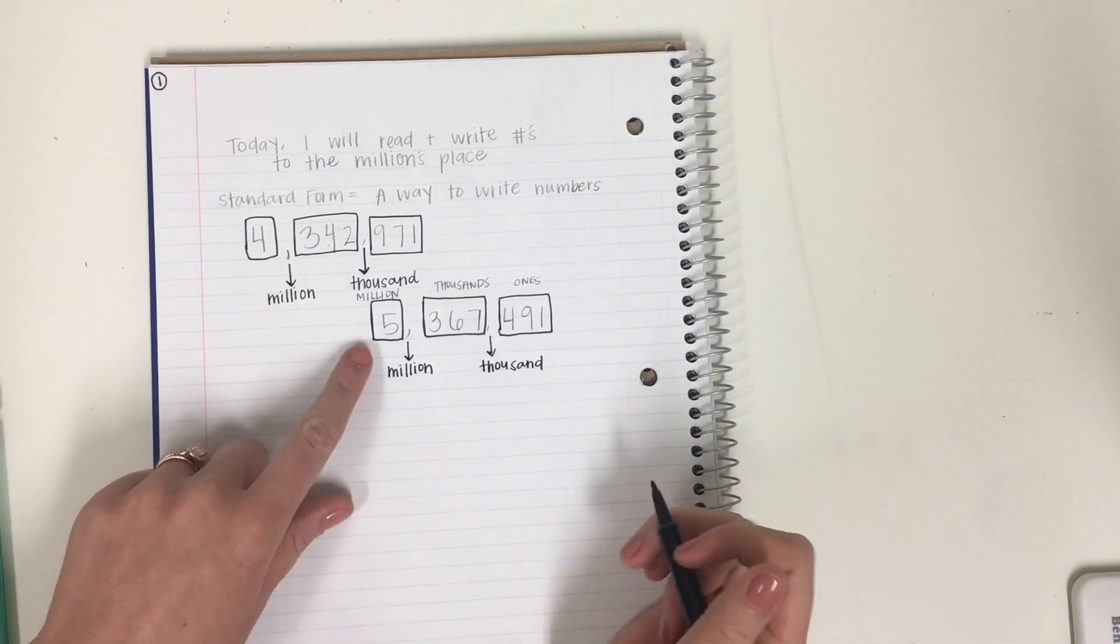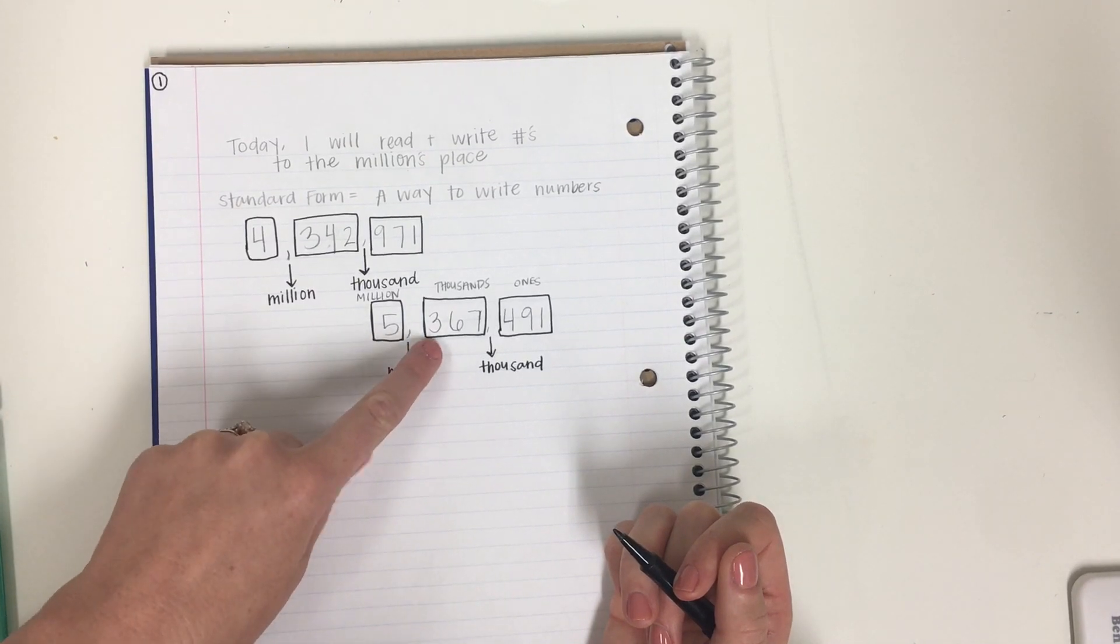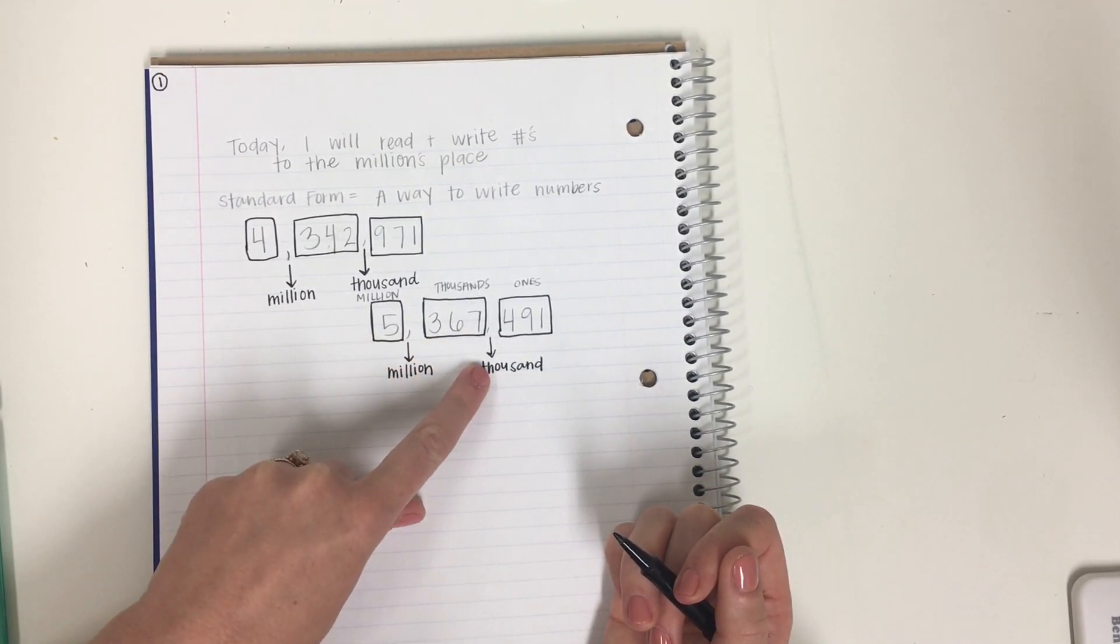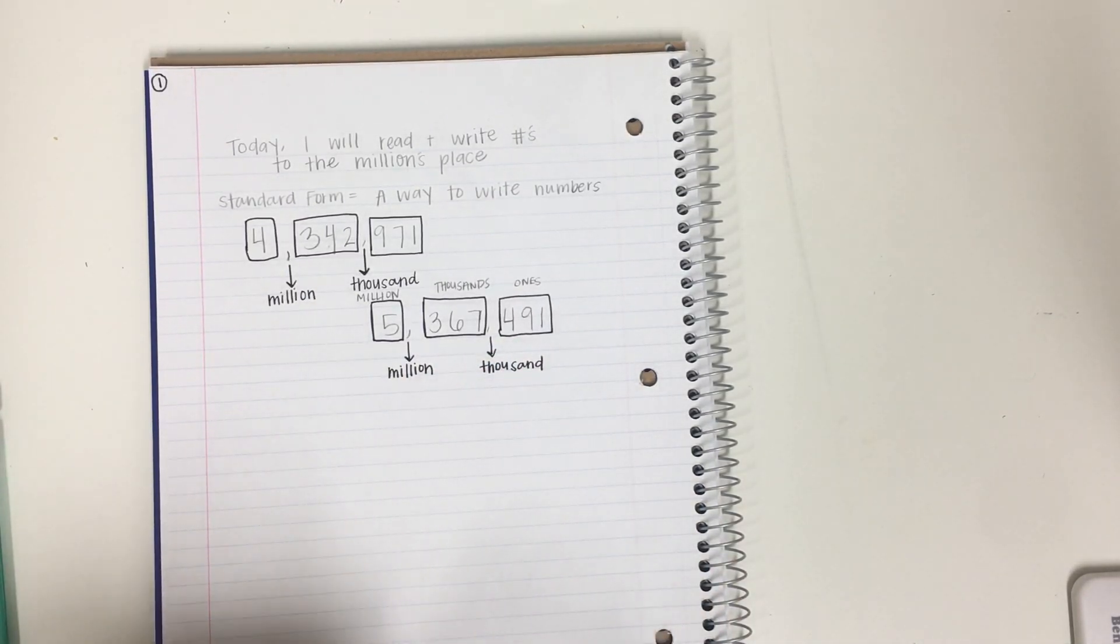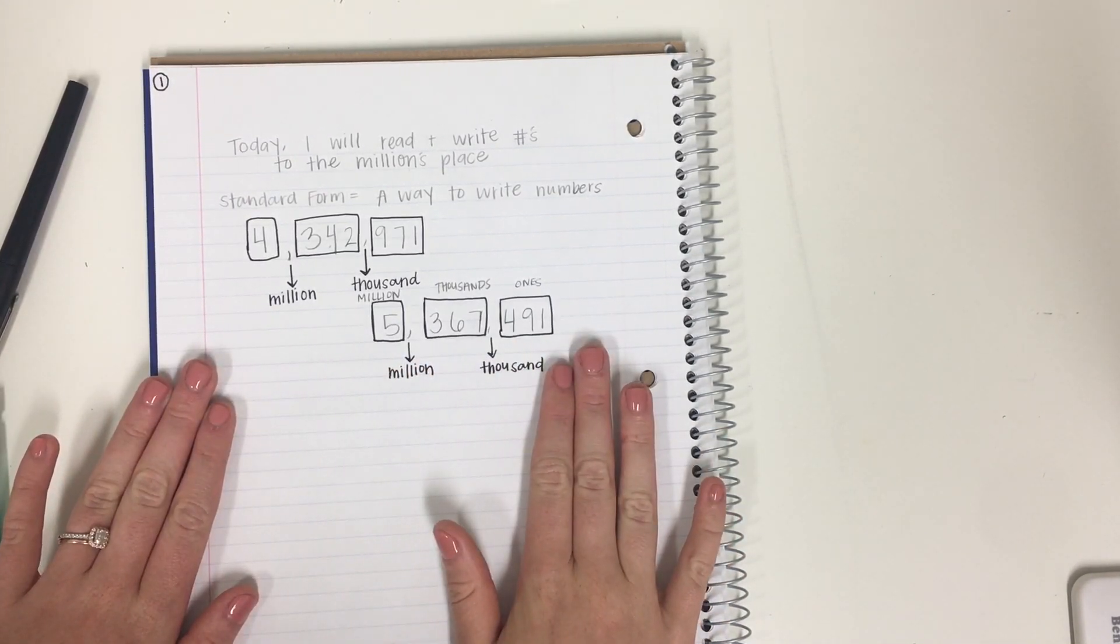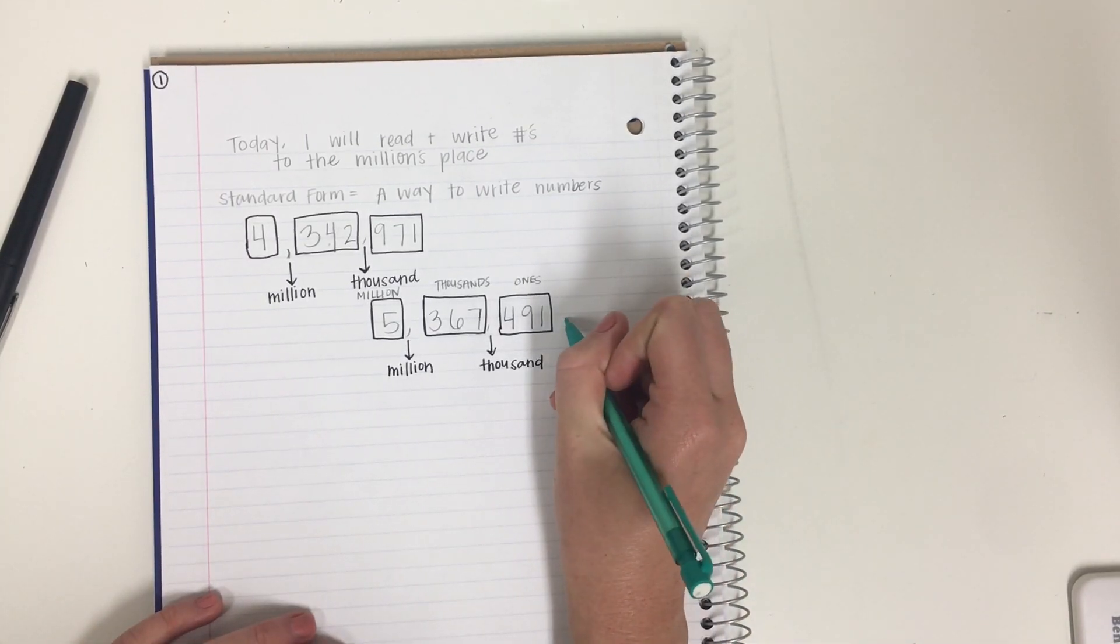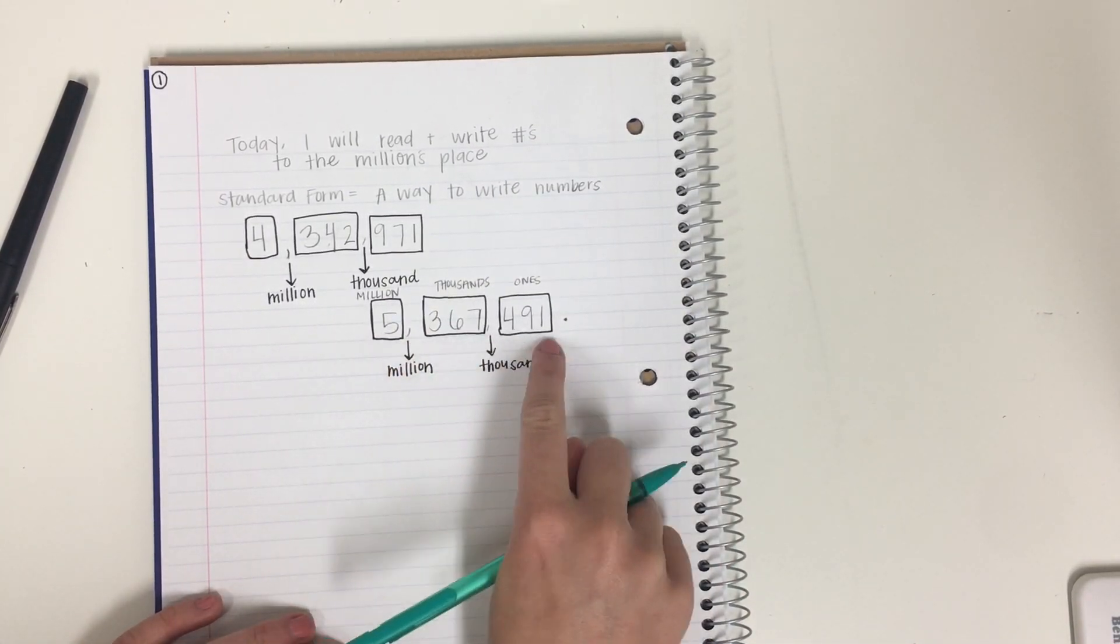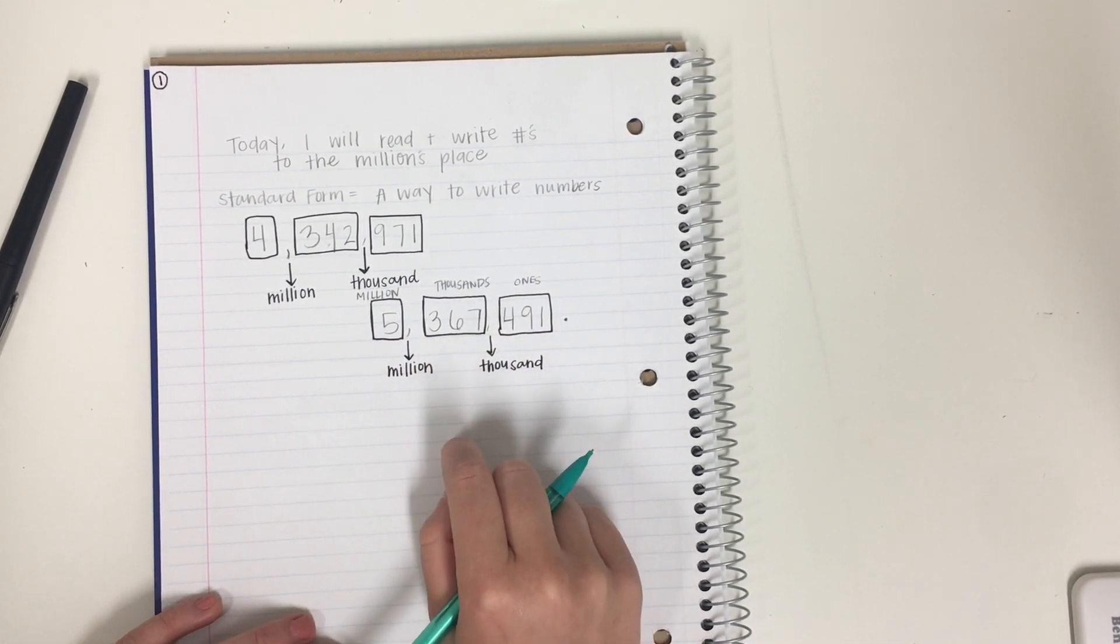Okay? So let's try reading this one together. 5,367,491. Now notice that when I read this number, I did not say and anywhere. I just read it through. Saying the word and, which can sometimes come naturally, is incorrect. We will not use the word and until we work with decimals. So this is a whole number. So we're just going to say it all the way through using those boxes and using our arrows to help us remember what period we're working in.